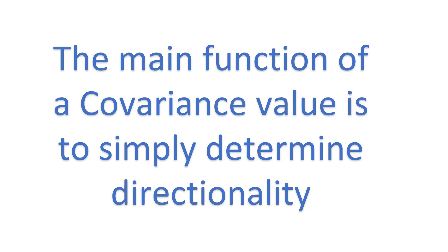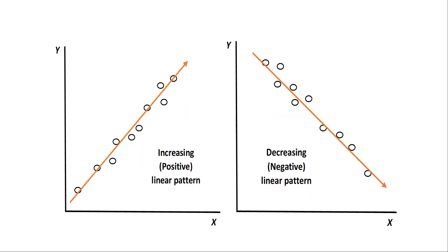Sometimes people think covariance is this mystical term that's going to explain a lot of things, but really it's just telling you direction. In SEM — structural equation modeling — there's an assumption that it's going to have a linear pattern. So if it has a positive covariance you'll see this increasing linear pattern, and if it's decreasing you'll see a negative or decreasing linear pattern. So in this instance if y is going really high, x is probably getting small. Covariance tells me directionality.